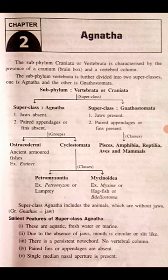Today we will learn the group Agnatha. Agnatha includes animals which are without jaws — the organisms in which jaws are absent. We may say jaws are absent in super class Agnatha.